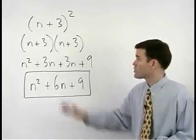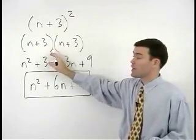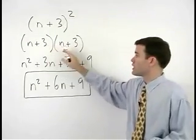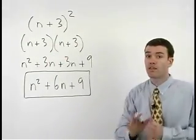Remember, whenever you square a binomial, you must write it out as that binomial times itself, then FOIL.